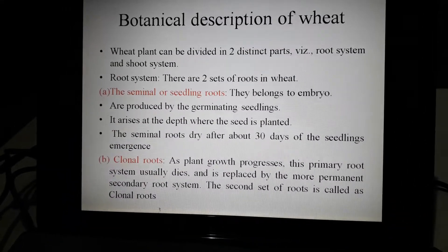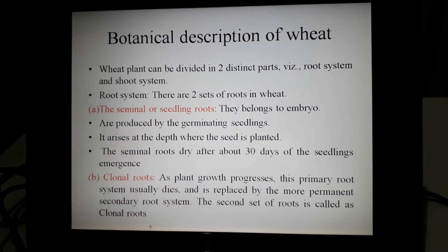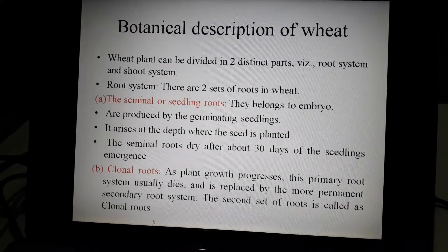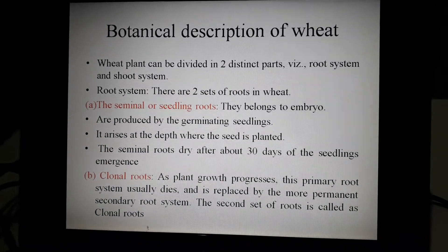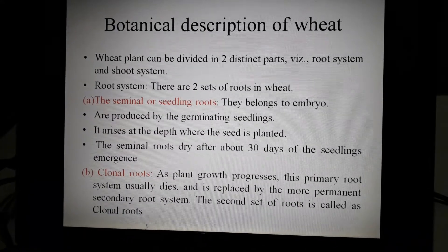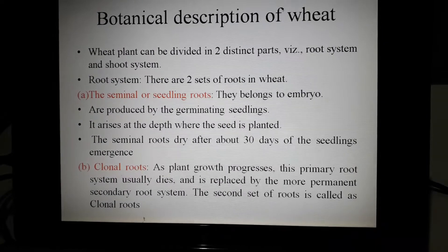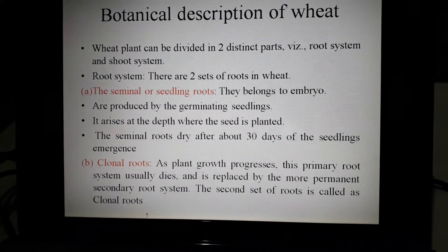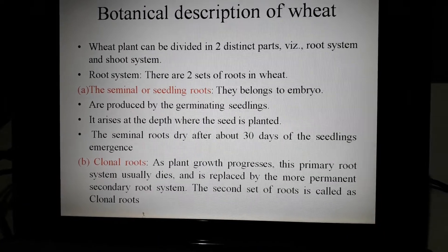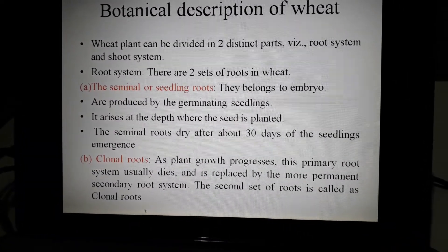Now, we need to know the different morphological characters present in wheat. The morphological description can also be called the botanical description. The wheat plant is divided into two distinct parts: the root system and the shoot system.